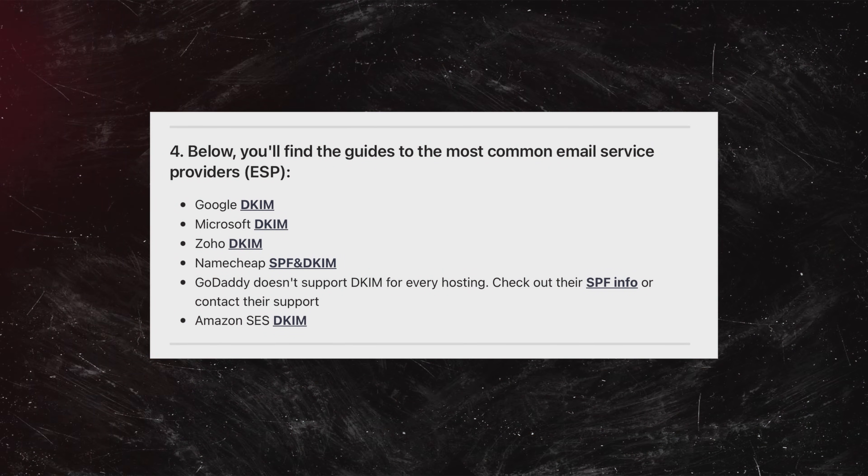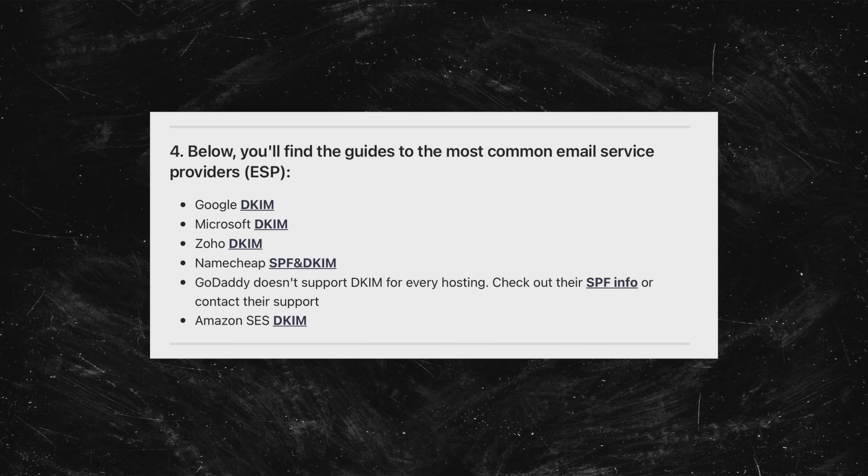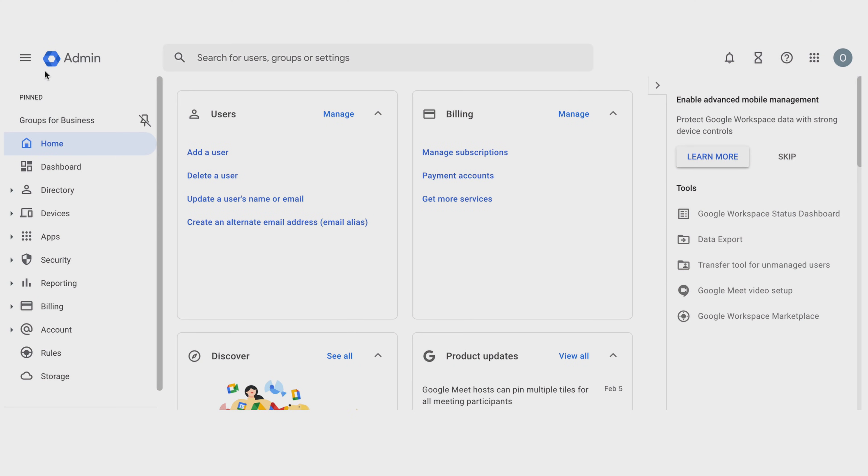I'm going to set up a DKIM for my Google Workspace account. We also created a help article where you'll find links to guides from other email providers on how to configure DKIM in their domains. To add a DKIM record, you need access to the admin account of your email provider — in my case, the Google Workspace admin account. You also need access to your domain name settings, because that's where you'll save all your generated keys. The first step is to go to the admin account.